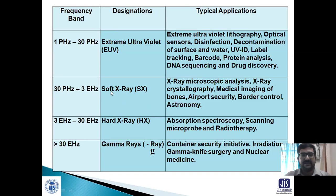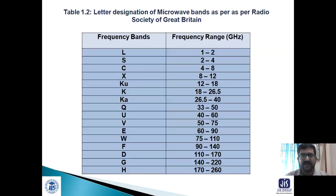Hard X-rays go from 3 exahertz to 30 exahertz with wavelengths in nanometers. During World War II, most microwave communication development occurred, and letter-coded band designations were established: L band (1–2 GHz), S band (2–4 GHz), C band (4–8 GHz), X band (8–12 GHz), and further bands including Ku, K, Ka, Q, U, and V, all designated for secret communications.